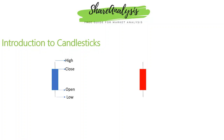If the market price moves up, that is a bullish market. If the price moves down, that is a bearish market. The rectangle box is the body of the candle. A green candle or blue candle is the bull candle symbol. The red candle is the bear candle.